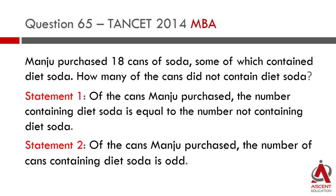We need to find how many of the 18 cans do not contain diet soda. Statement 1: of the cans Manju purchased, the number containing diet soda is equal to the number not containing diet soda. Statement 2: of the cans Manju purchased, the number of cans containing diet soda is odd. We will quickly look at these two statements and evaluate them.